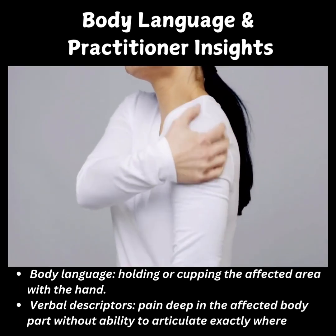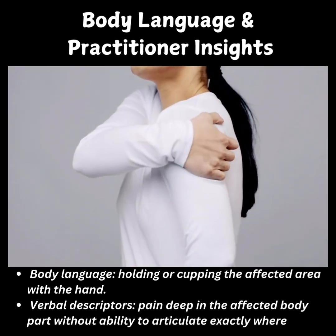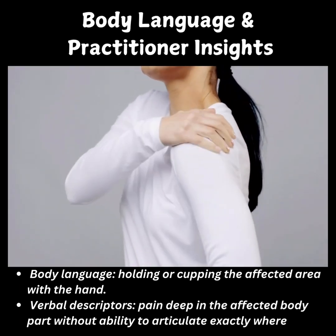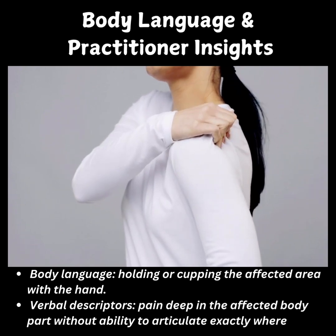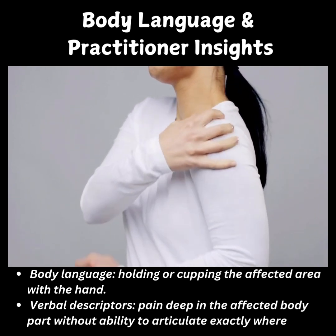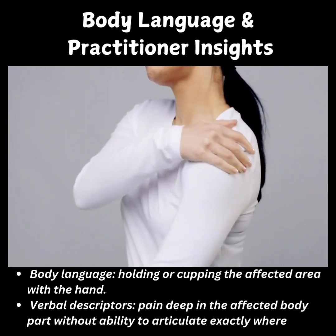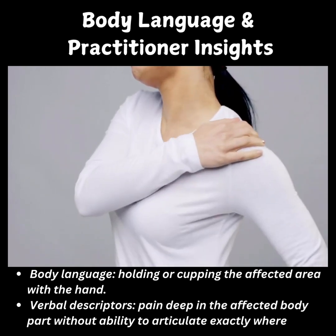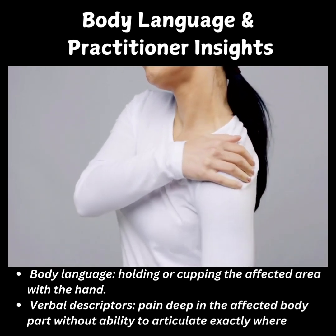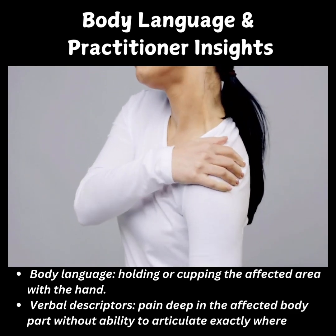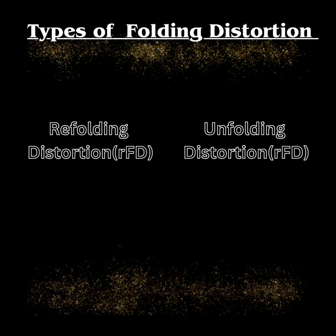A folding distortion happens when the fascia — the connective tissue around muscles and joints — gets stuck after a movement, like when you twist or fold something and it doesn't return to its normal position.